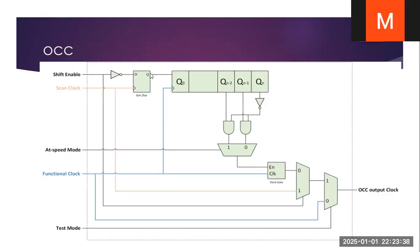Good morning everyone. Today we are going to discuss about OCC — On-Chip Clock Controller. This is going to switch between the scan clock and the functional clock. The functional clock frequency is always higher than the scan clock frequency.